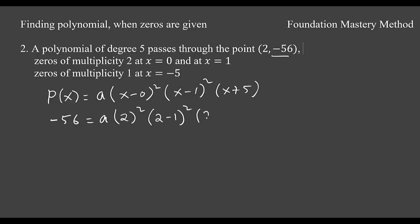(2 minus 1) squared, (2 plus 5). And then your required polynomial is P(x) equals negative 2, and then x squared you can write without parentheses, (x minus 1) squared, and then (x plus 5). We are done.